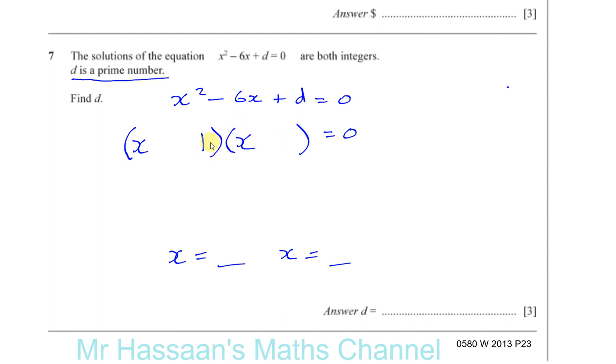So we know for sure there must be a 1 here. And we also know prime numbers are always positive. So you've got to have these two numbers as negatives to give you a positive answer here. This is going to be d, minus d here and minus 1 there. So the final answer will be x equals d and x equals 1 here. That will make d a positive number.